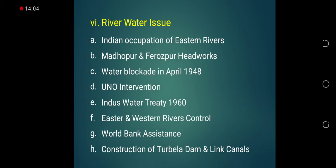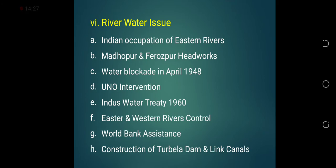Pakistan at that time was economically unstable. Industry was in a very bad position, and the whole economy was running on agricultural produce, which came mainly from Punjab and Sindh. With this blockade of water, the Punjab and Sindh provinces were severely hit by water shortage, due to which Pakistan had to ask the United Nations for intervention. Through the efforts of the United Nations, in 1960, an agreement was concluded between Pakistan and India, known as the Indus Water Agreement or the Indus Water Treaty.